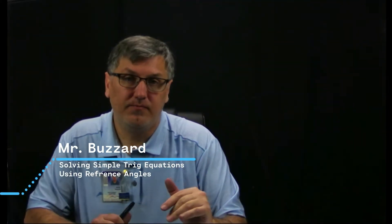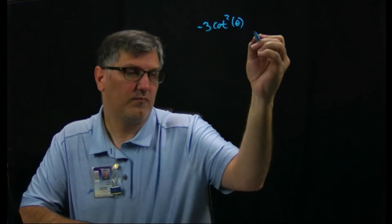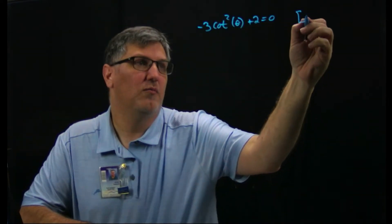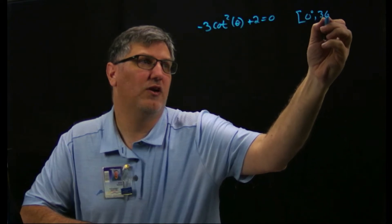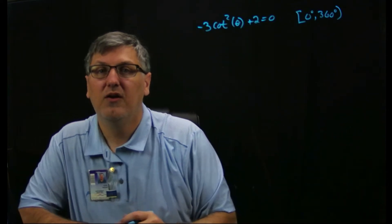All right, so now let's look at solving one of these simple trig equations when we have a reciprocal function, as well as instead of doing the algebra part as a linear, we're going to add in quadratic. So say I have something like negative 3 cotangent squared of theta plus 2 equals 0, and I want the answer between 0 degrees and 360 degrees.